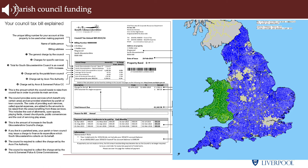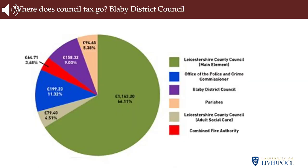Parish councils are able to set a precept on council tax bills, which is often their main source of funding. Income and expenditure estimates are calculated annually and the precept amount is added to local council tax, returned to parishes in two yearly instalments. Parish councils can also apply for UK grants and previously for EU funding under Objectives 1 or 2. Unlike other levels of local government, there is no limit on the amount by which parish councils can increase their precept.